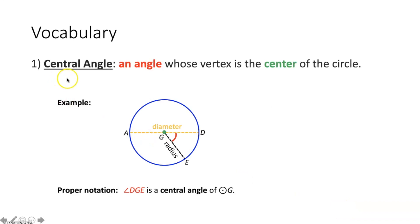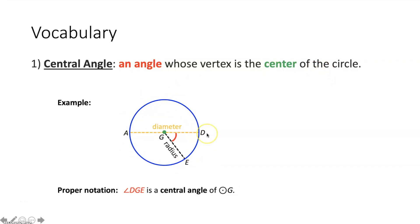First vocabulary term is a central angle. That would be an angle whose vertex is the center of the circle. So let's take a look at what that looks like. In our example down here, we have circle G, and within circle G, we have a central angle.